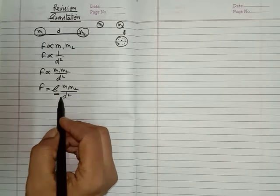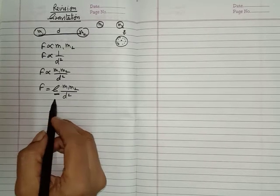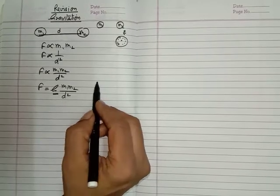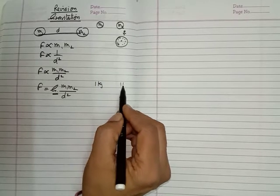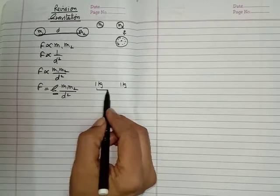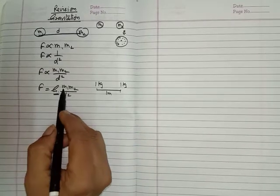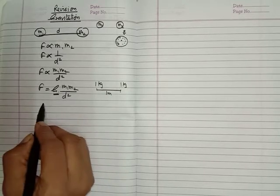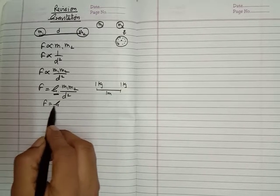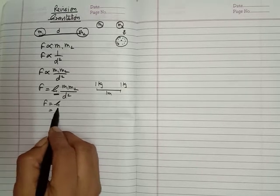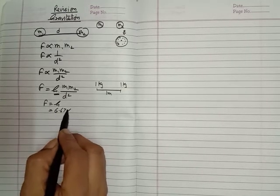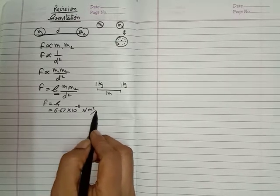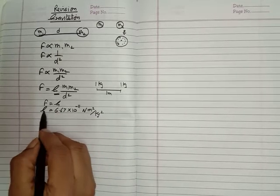The value of G does not change. We can change the mass of the object, we can change the distance between the objects, but the value of G does not change. By experiment it was found that if two objects each of mass 1 kg are kept at a distance of 1 meter from each other, so m1 is 1, m2 is 1, d is 1. Putting these values we find that F equals G, and the value is 6.67 times 10 to the power minus 11 newton meter square per kg square.